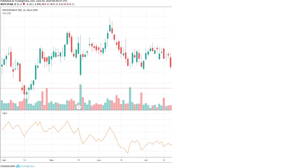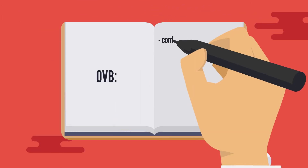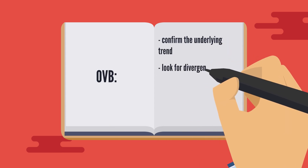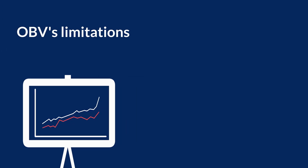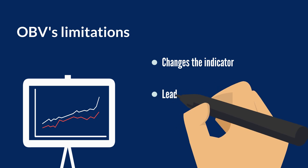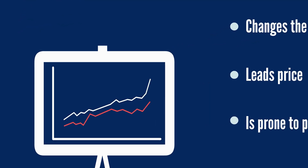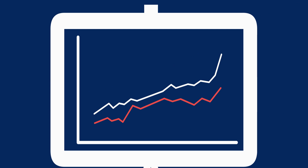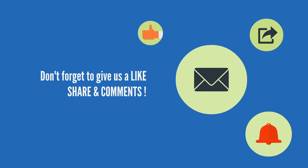In summary, On Balance Volume is a simple technical momentum indicator that acts as a confirmation tool for price trends based on volume. OBV can confirm the underlying trend, identify divergences that may signal a price change, and help chartists forecast breakout directions. However, OBV has limitations: volume spikes can distort the indicator, and it is prone to false signals, so it should be used in conjunction with other technical analysis indicators. Thanks for watching — don't forget to subscribe to our channel to learn more about technical analysis and blockchain developments.